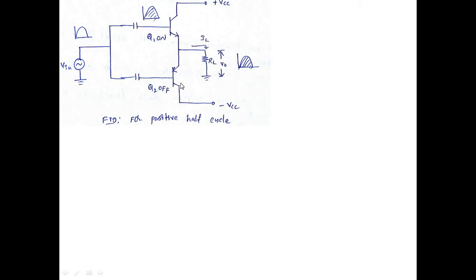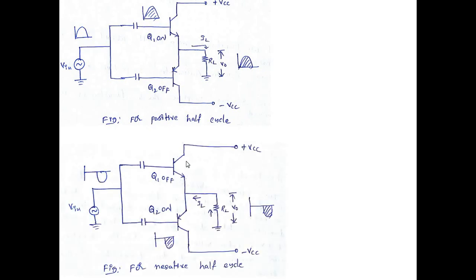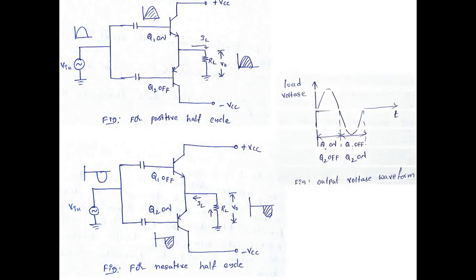When a negative half cycle is applied, Q1 turns off and Q2 turns on. The output terminal is at a higher potential compared to -VCC, so current flows through Q2 and through RL toward -VCC, making the output positive at one end and negative at the other — producing the negative half cycle output. Thus, Q1 on gives positive half, Q2 on gives negative half cycle across the load.